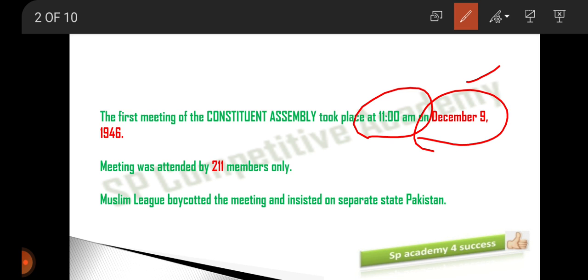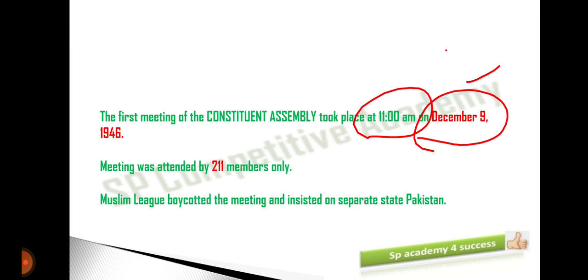Even today, parliament sessions start at 11 AM — we are still following the same timing as the first meeting of the Constituent Assembly. You may get a question: when was the first meeting of the Constituent Assembly? The answer is December 9th, 1946.